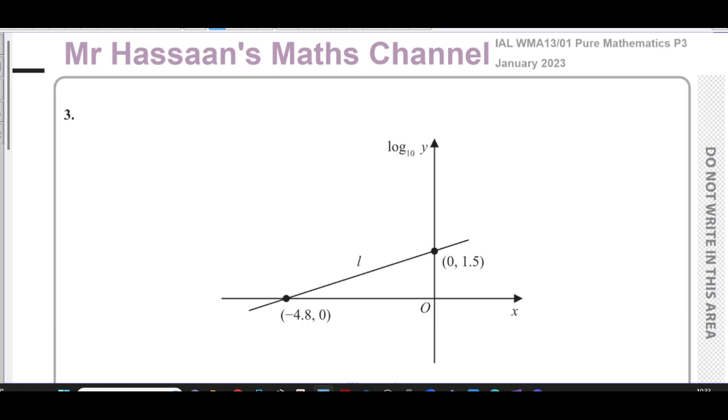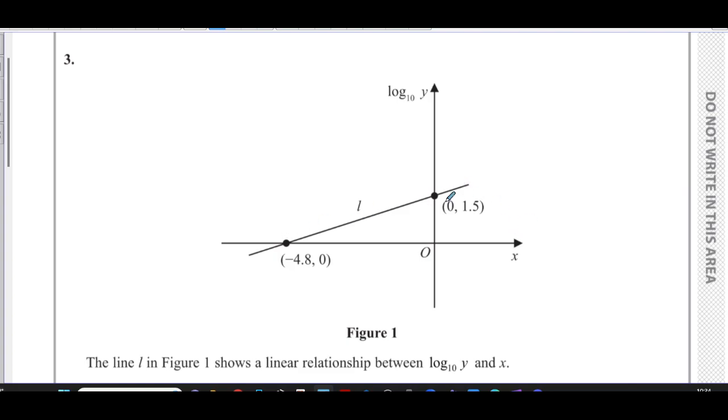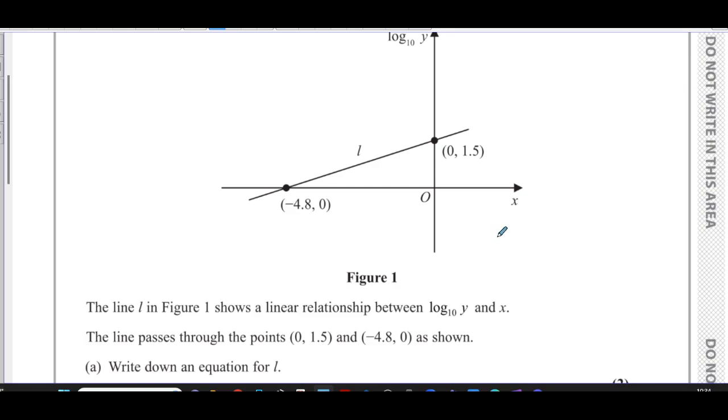This question here is about logarithms and exponentials. We're given a graph where log to the base 10 of y is plotted against x, and we're given this straight line plotted on this graph which has the coordinates shown. The x and y intercepts are given of this line. It tells us that the line l in Figure 1 shows a linear relationship between log base 10 of y and x. The line passes through the points (0, 1.5) and (-4.8, 0) as shown. Write down the equation for l.